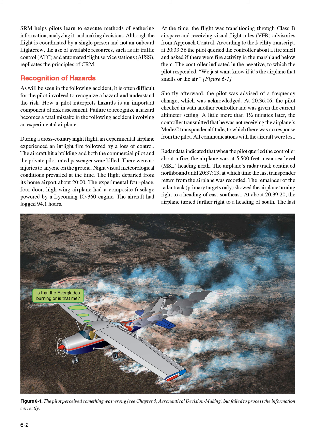Night visual meteorological conditions prevailed at the time. The flight departed from its home airport at about 2000 hours. The experimental four-place, four-door, high-wing airplane had a composite fuselage powered by a Lycoming IO-360 engine. The aircraft had logged 94.1 hours. At the time, the flight was transitioning through Class B airspace and receiving VFR advisories from approach control.